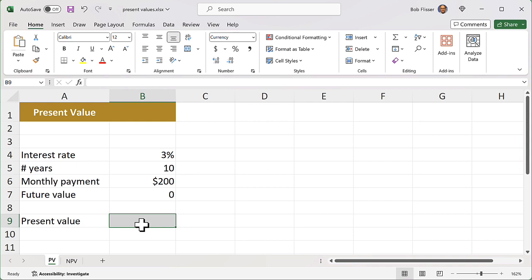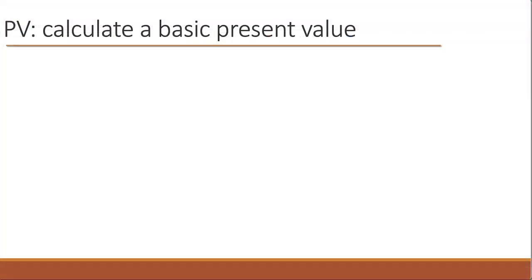First, let's look at the function syntax. The syntax is equals PV. And then we have three required arguments. The first argument is the interest rate. It's typically the yearly rate. The second argument is the number of periods, which is usually the number of months or the number of quarters. The third argument is what is the payment amount. This needs to be the same amount in every period, every month or every quarter.